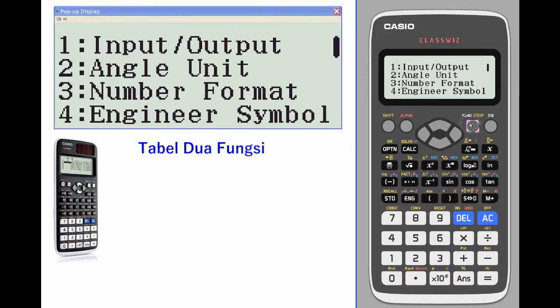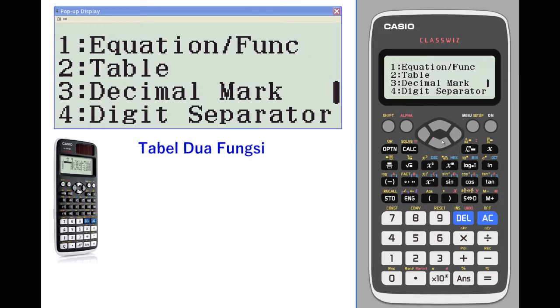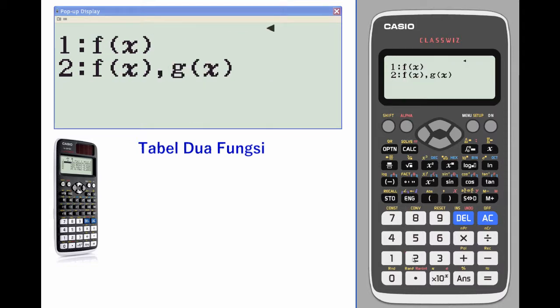Let's take a look at two functions at once. We'll toggle down until we see table number two. We'll select option number two. So we're going to have two functions.